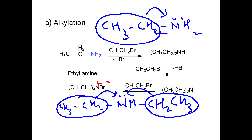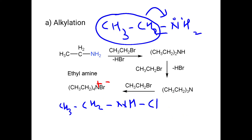In tertiary amine, three ethyl groups are present — three electron-donating groups — so electron density on nitrogen is highest, making tertiary amine the most reactive. Triethylamine further reacts with bromoethane to give quaternary ammonium salt. In quaternary ammonium salt, there is no lone pair on nitrogen; nitrogen makes four bonds, carries a positive charge, and the reaction stops. That's how alkylation is carried out.